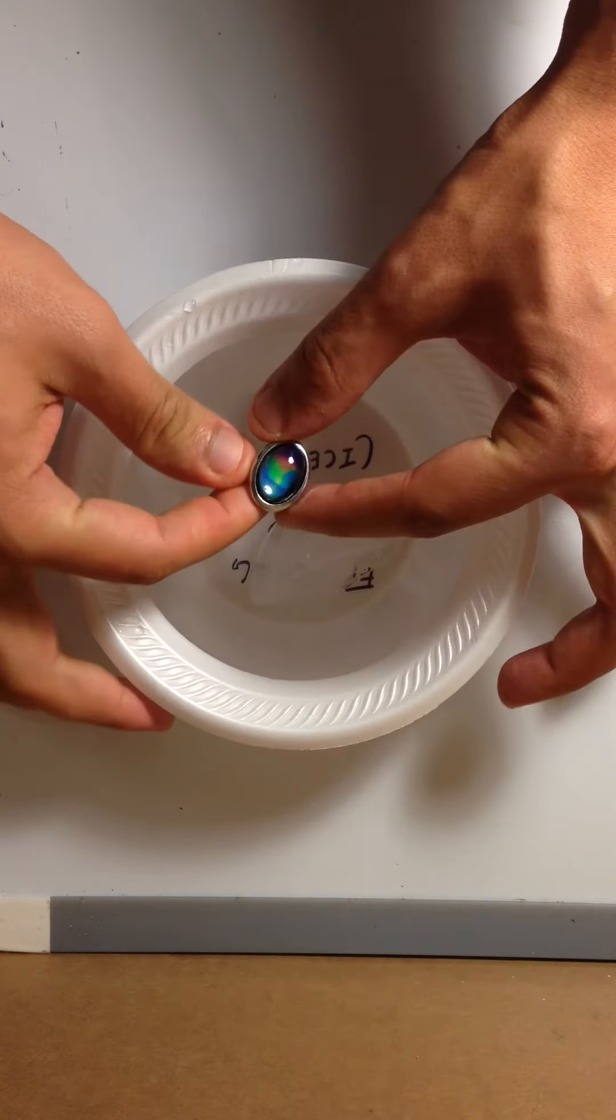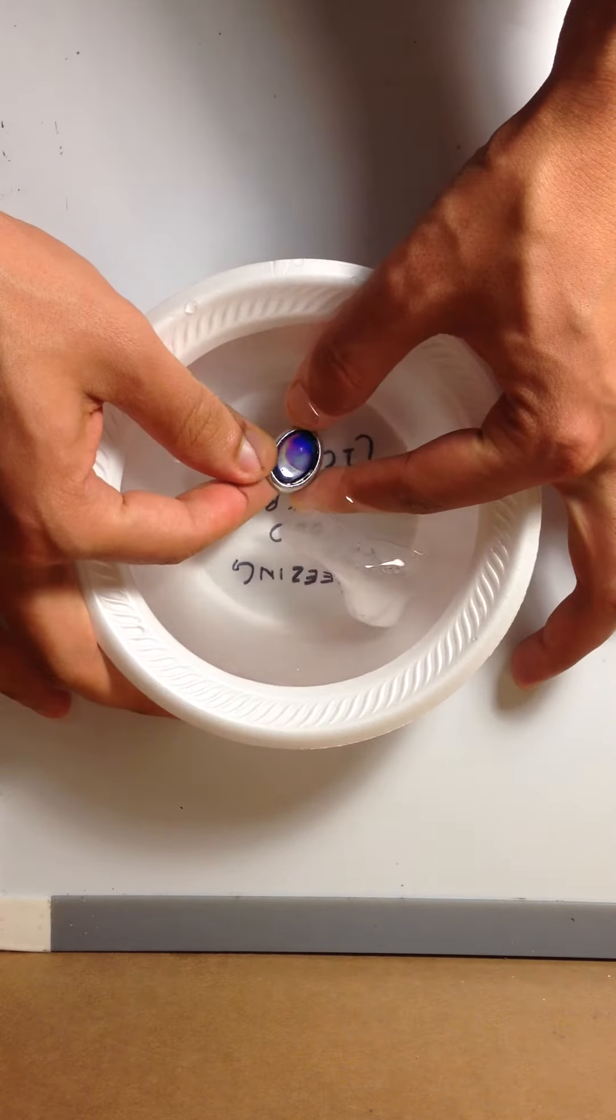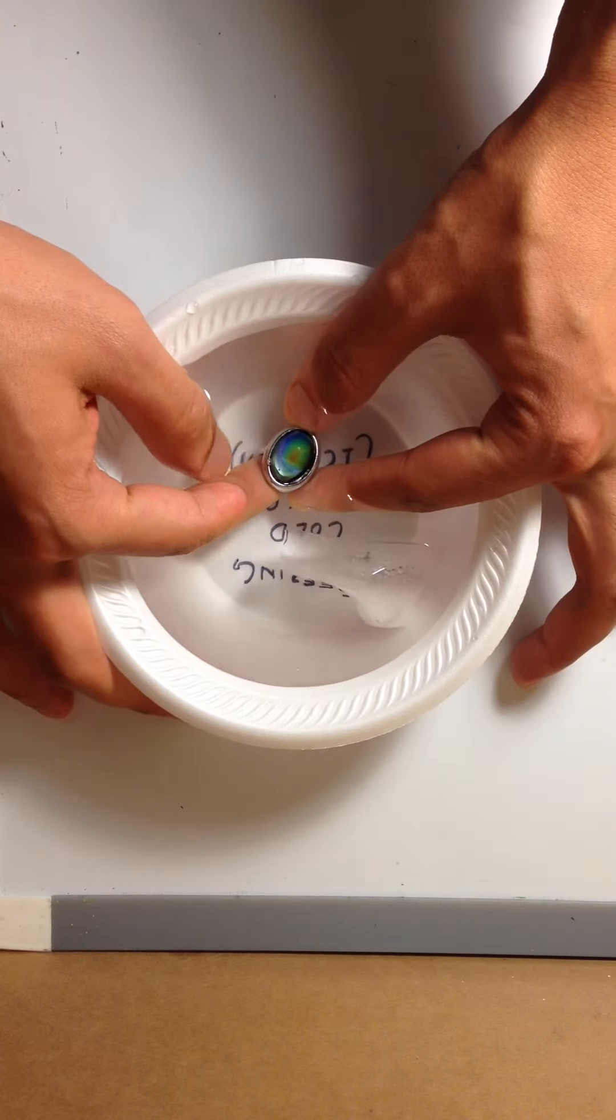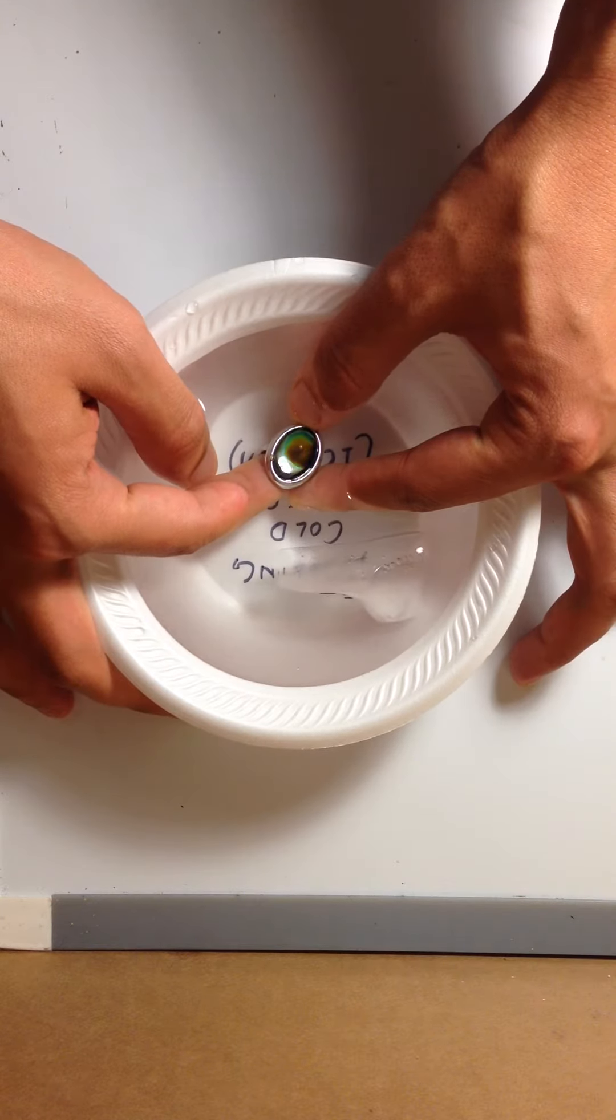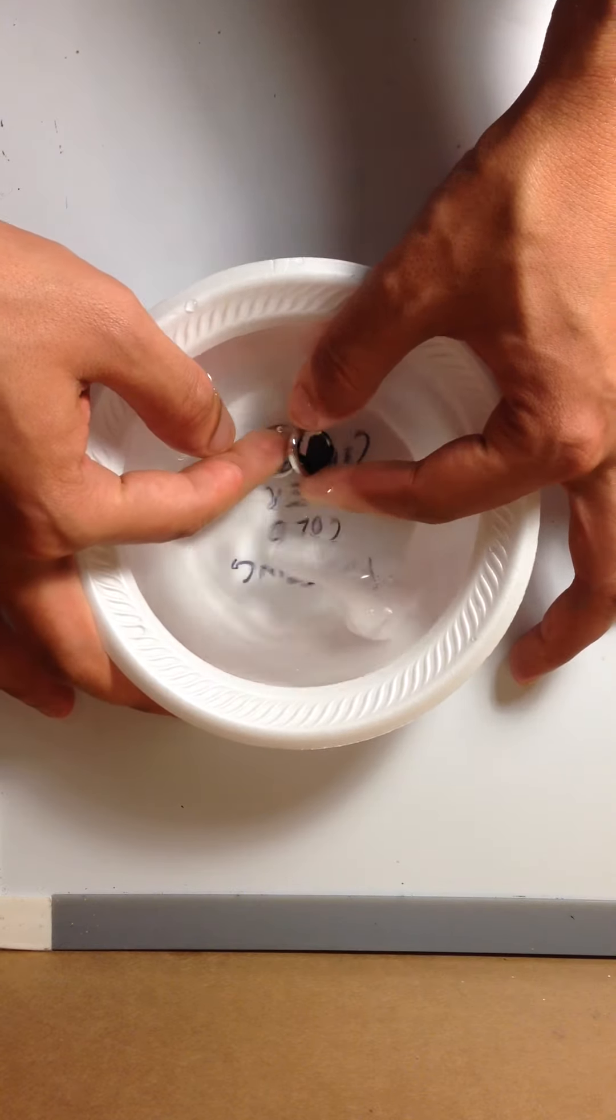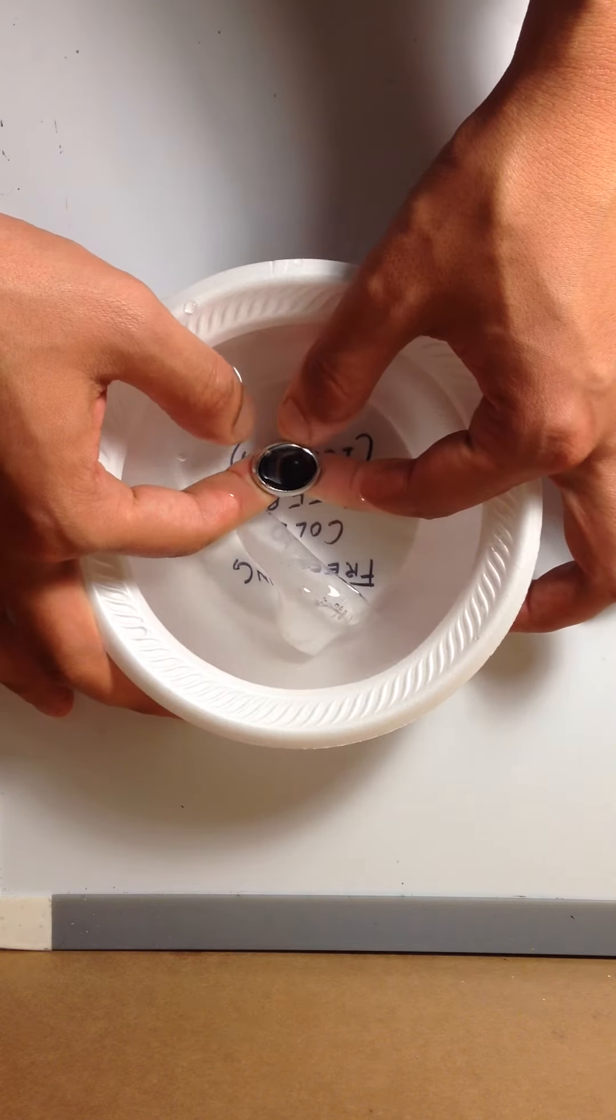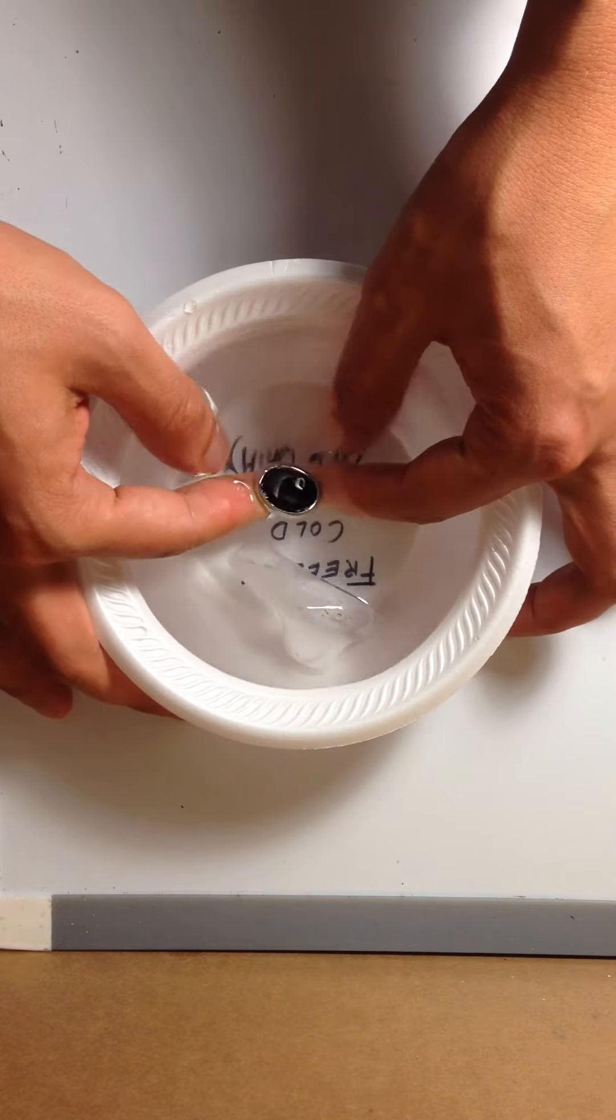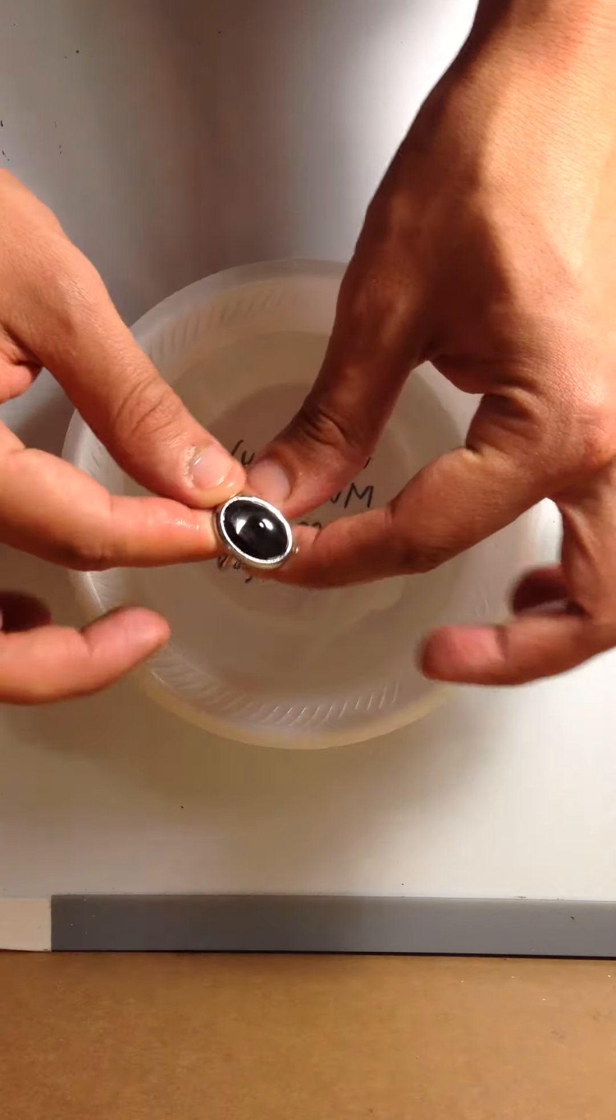If you can see, the color is gradually changing—it's becoming darker now, even more darker, and now it's completely black, very dark.